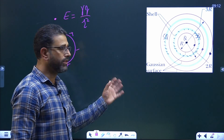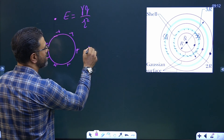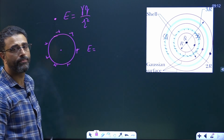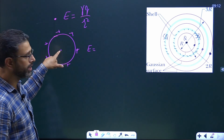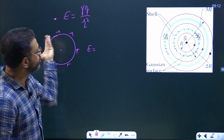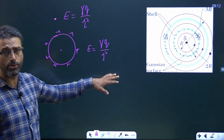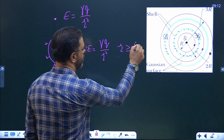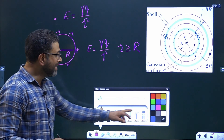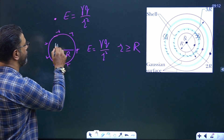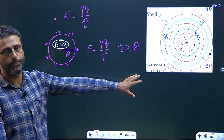For a uniformly charged shell, for points lying outside the shell it behaves like a point charge located at its center, so the field is γQ/R². This is only valid for outside points where R is greater than or equal to the shell radius. Inside the shell, the field is zero.